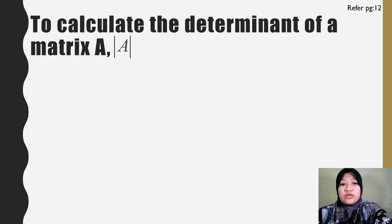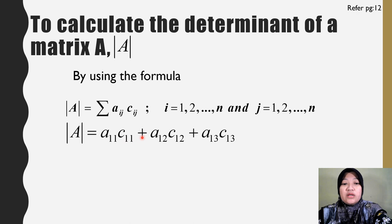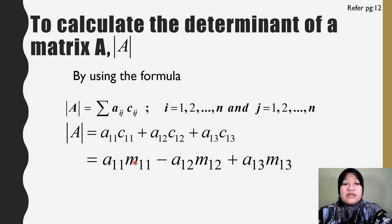Students, how to calculate the determinant of matrix A. This is the symbol for determinant of matrix A. We can use the formula: determinant of A equals the summation of A_ij times C_ij, where i and j go from 1 to N. So for the first row: A_11 times C_11 plus A_12 times C_12 plus A_13 times C_13. This can also be written as A_11 times M_11 minus A_12 times M_12 plus A_13 times M_13.